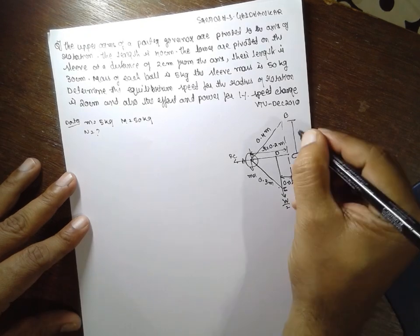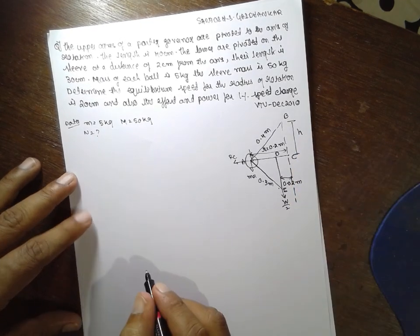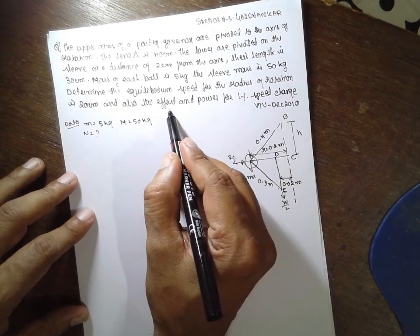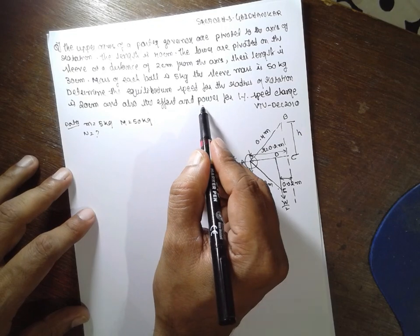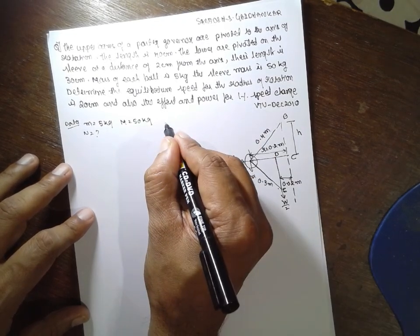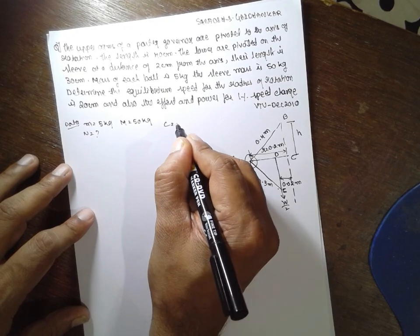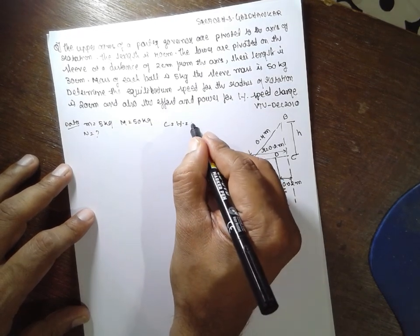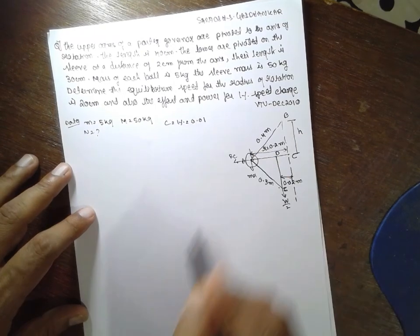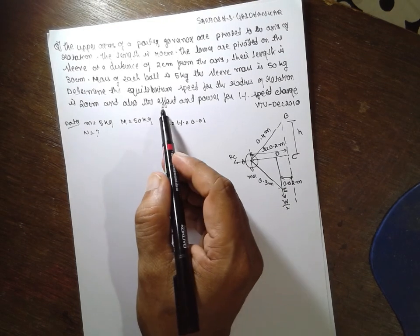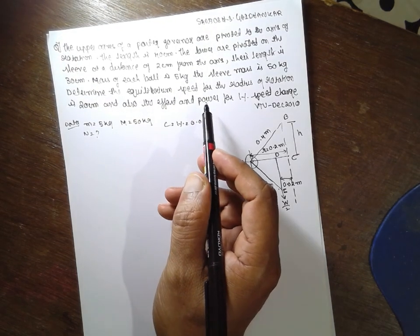Now this is the H. This is unknown for us. And further, the effort and power we have to find out. And this is nothing but C. C is nothing but given as 1%. If you convert into fraction 0.1 divided by 100, 1% divided by 100, you will get C is equal to 0.01. You have to find out the effort and the power.